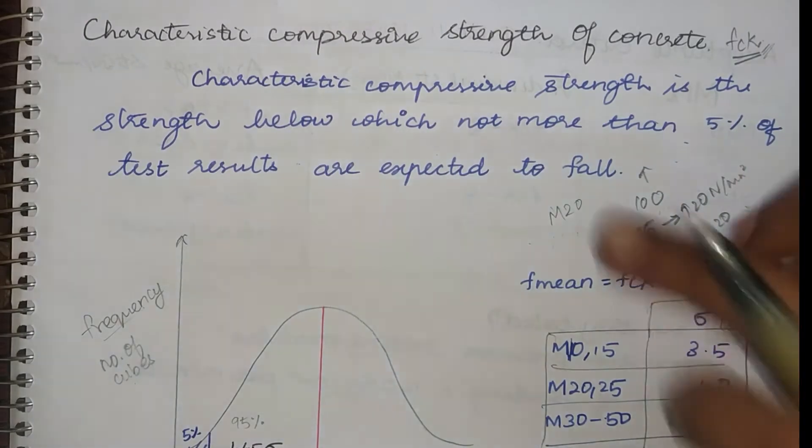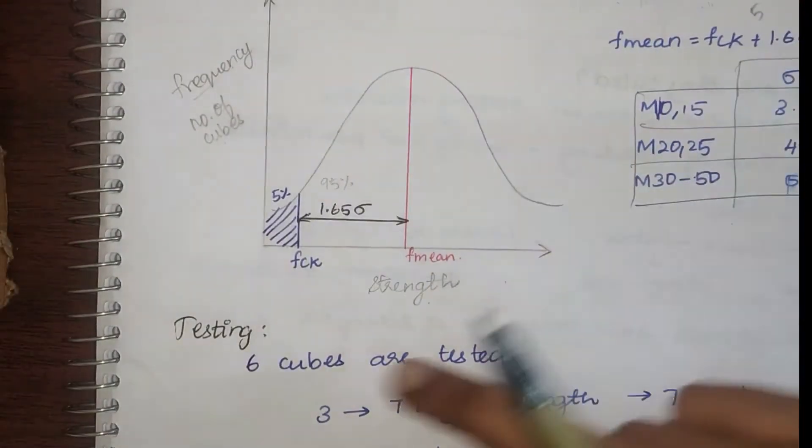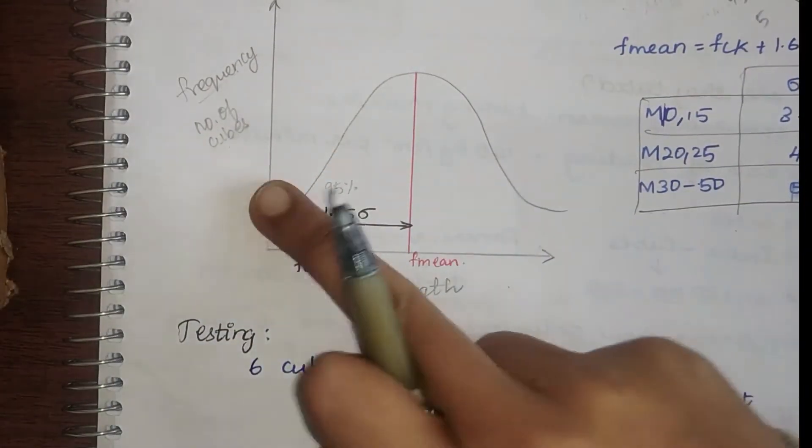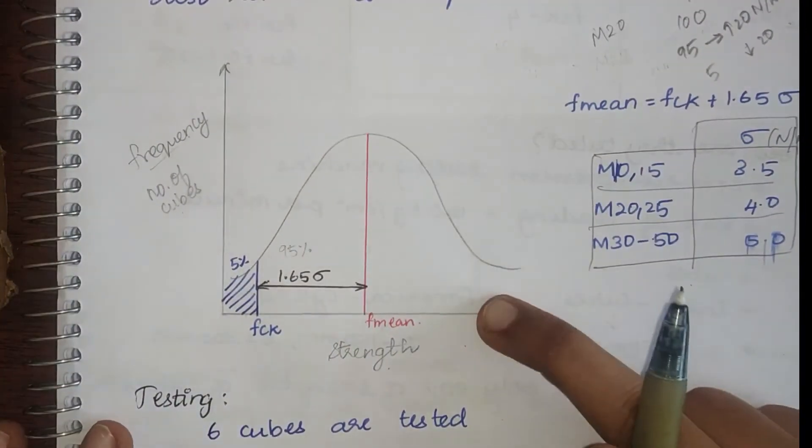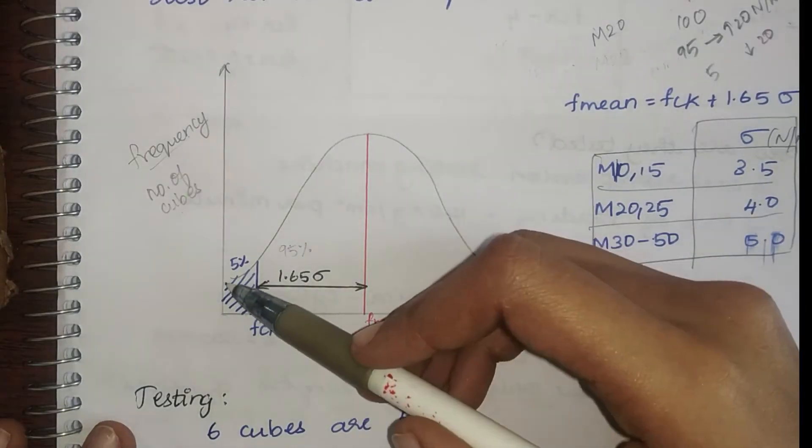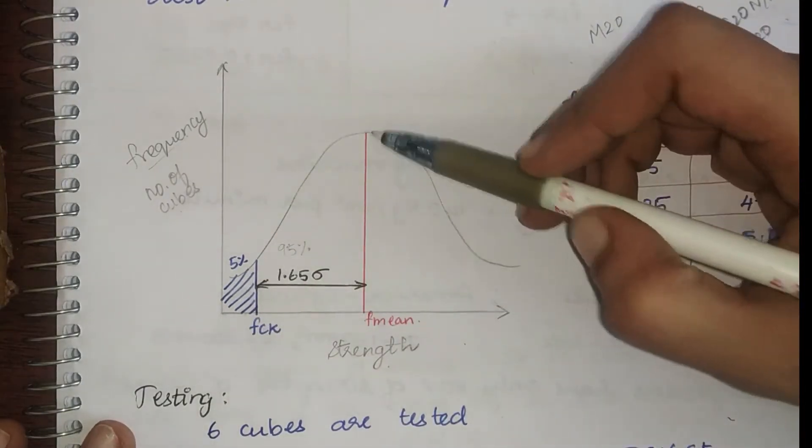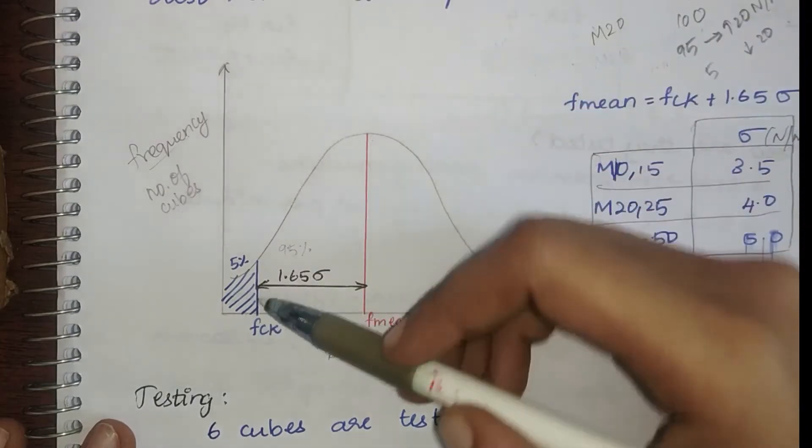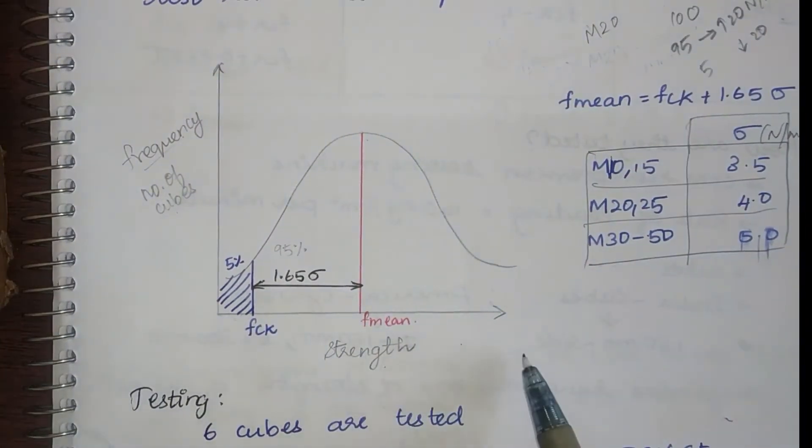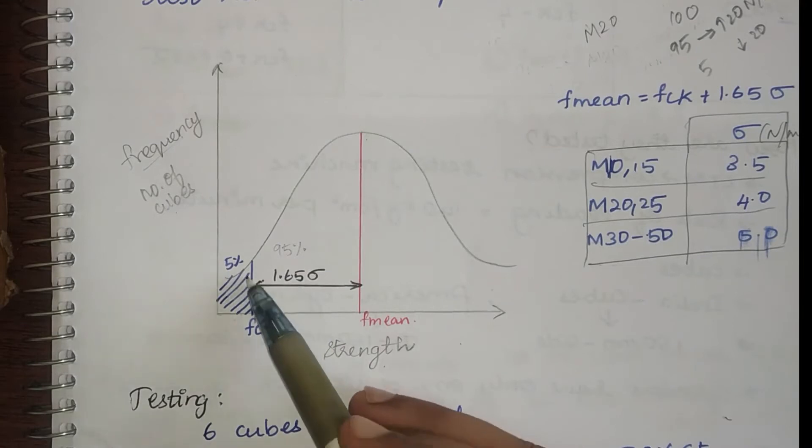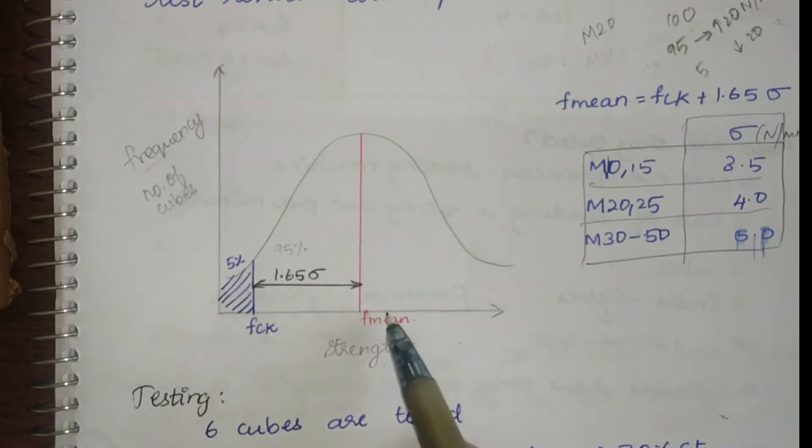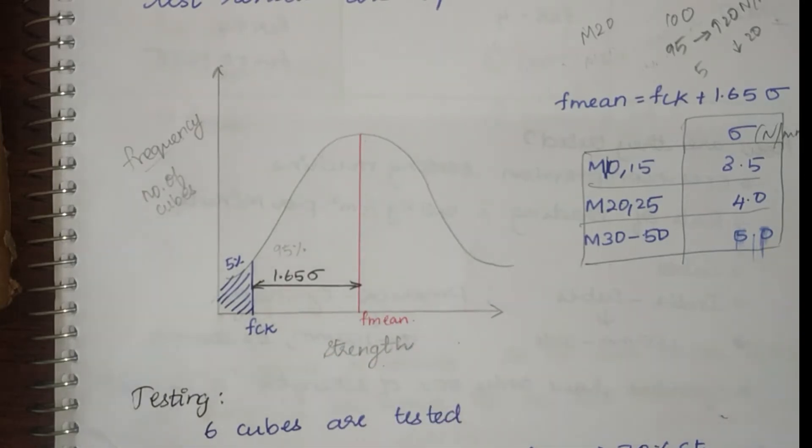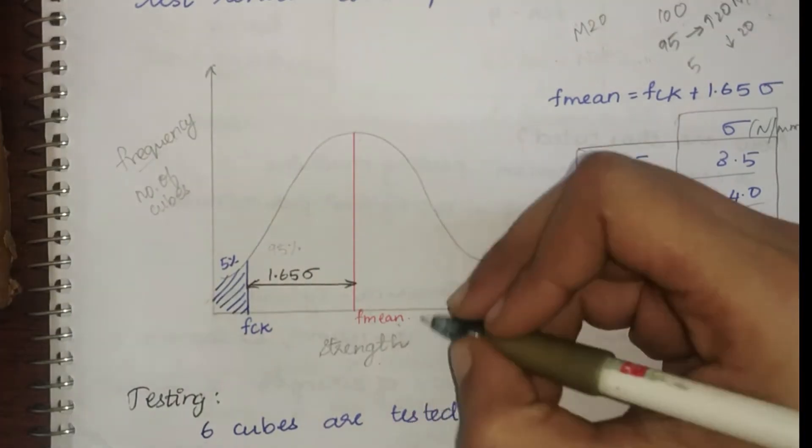If we plot this in a curve with the x-axis as strength and y-axis as frequency or the number of cubes, we will get a normal distribution. So you can see that there is a curve and this is my f mean, which is the mean strength, and this is the strength which is in increasing order. So 5 percentage of strength will be somewhere here. So after my 5 percentage comes my fck, and this is my f mean.